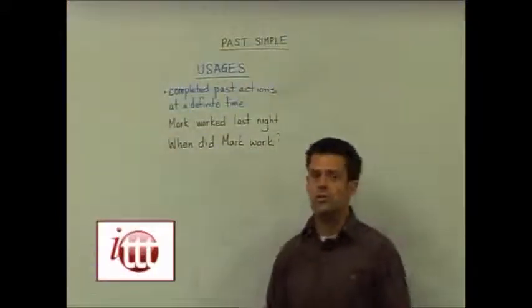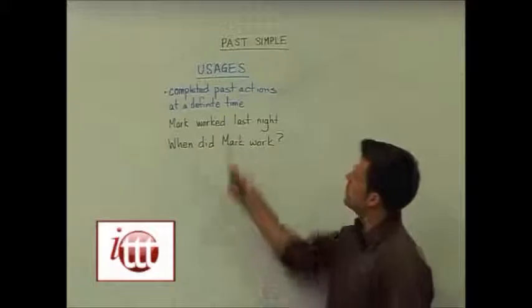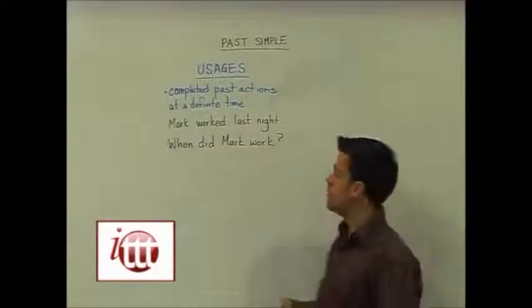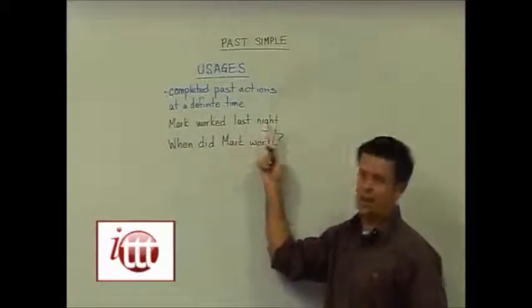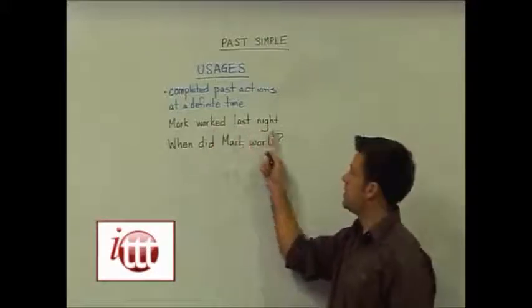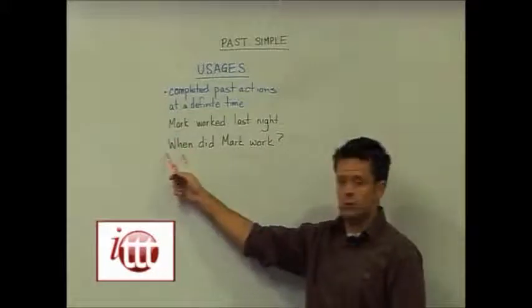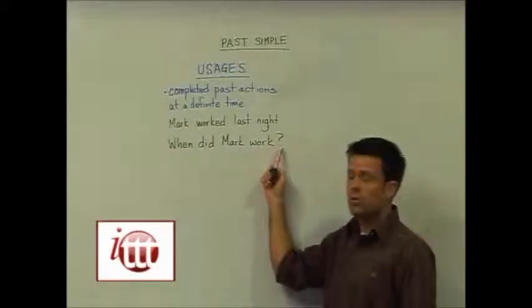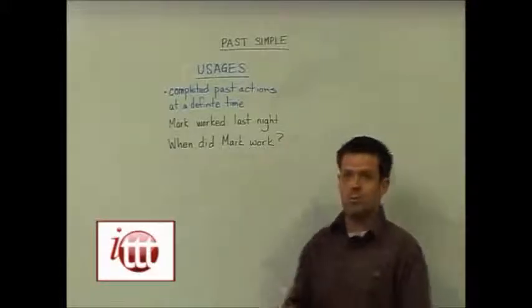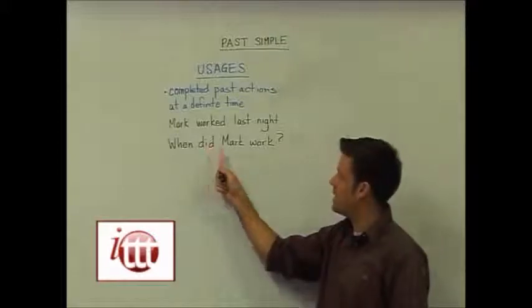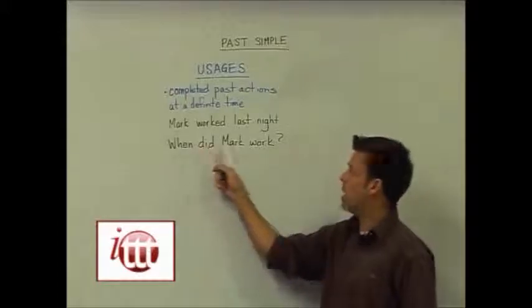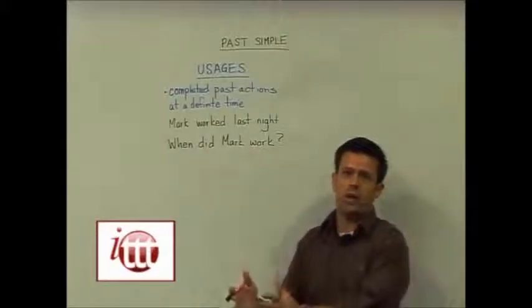The usage for the past simple tense is when you want to talk about completed actions in the past at a definite time frame. For example, 'Mark worked last night' — he worked in the past, and the time is 'last night'. We could also ask questions: 'When did Mark work?' — implying the time will be mentioned in the answer, and indicating it is in the past rather than 'When does Mark work', which brings us back to the present.